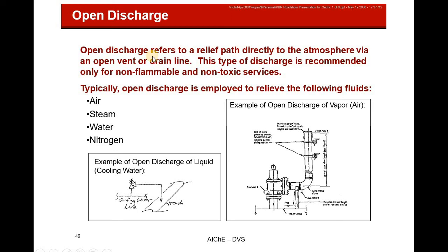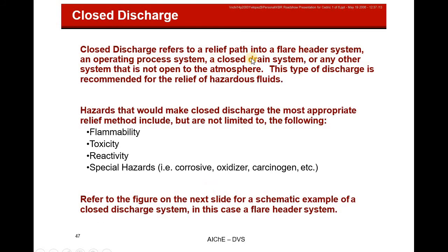The closed discharge system collects relief from rupture discs and spring-loaded valves at various overpressure points, all going to a knockout drum before the flare stack. You calculate the dropout velocity in the knockout drum, separate liquid and vapor, then send vapor to the flare and burn it within certain regulatory standards.